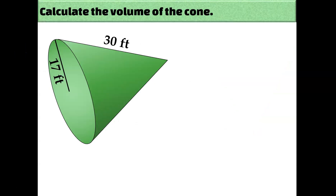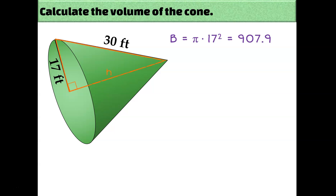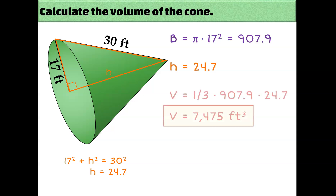Let's give it a try. The area of the base of this cone — since the base is a circle, I'll do pi r squared — so the area of the base is 907.9. But for the volume calculation I also need the height of the cone, and the 30 that I was given is the slant height. The height is the distance between the apex and the center of the base, so we'll use the Pythagorean theorem. I find out that the height is about 24.7 feet long. So the volume of the cone equals one-third of the base times the height, for a total of 7,475 cubic feet.